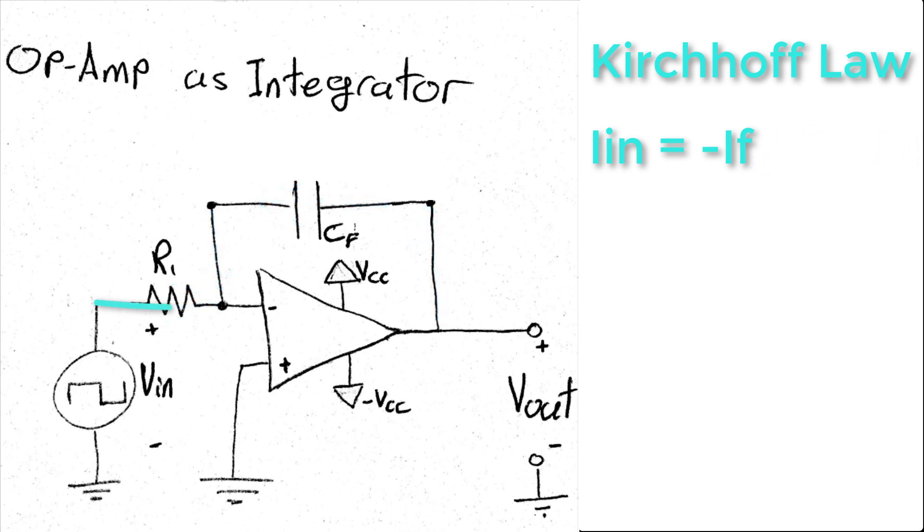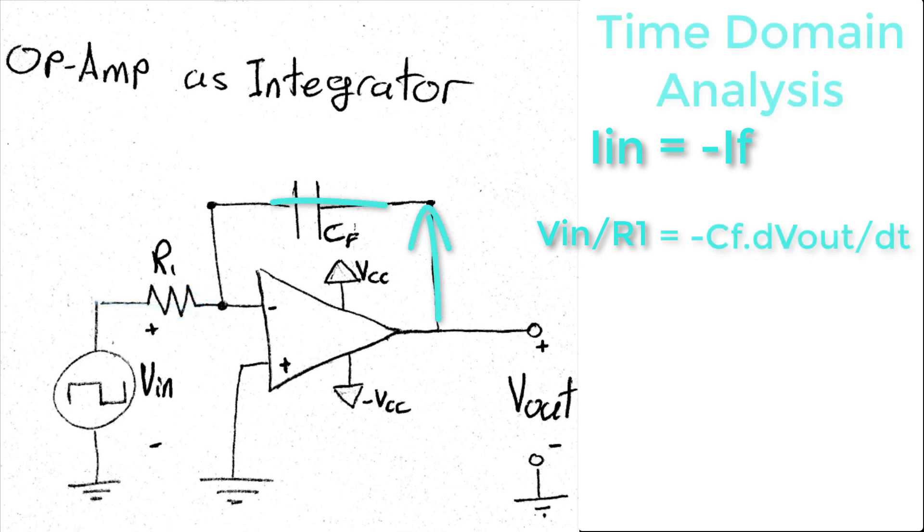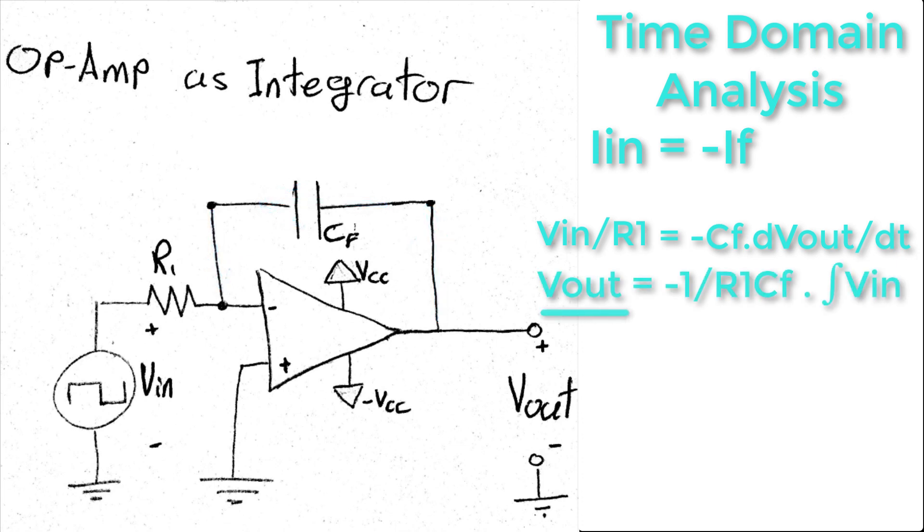Of course, we know that the input current is equal to the input voltage divided by R1, and the feedback current is equal to the capacitance times the derivative of the output voltage. And by doing a little bit of math, we can see that the output voltage is equal to something times the integration of the input voltage. Boom! That's why this circuit is called voltage integrator.